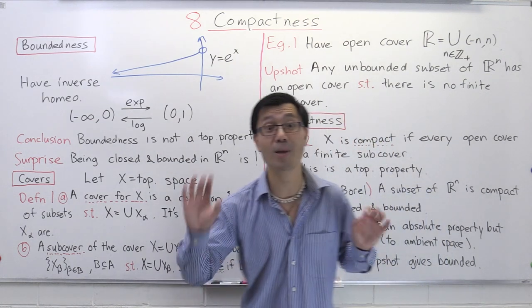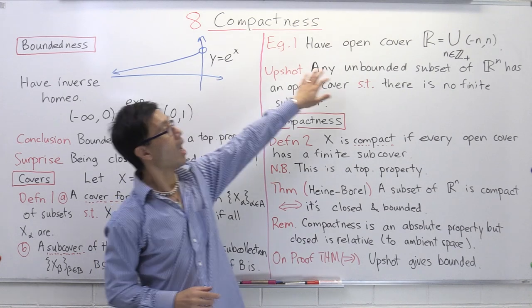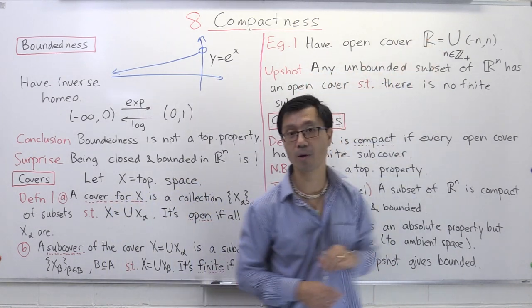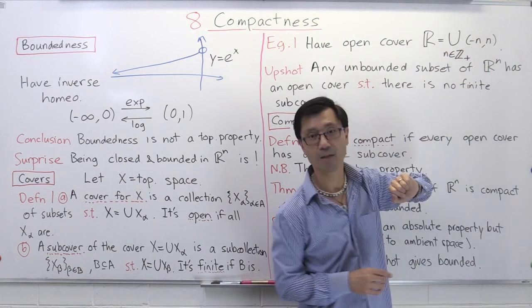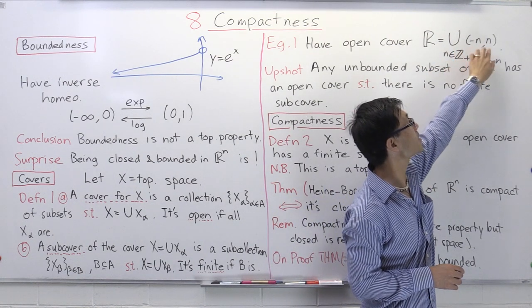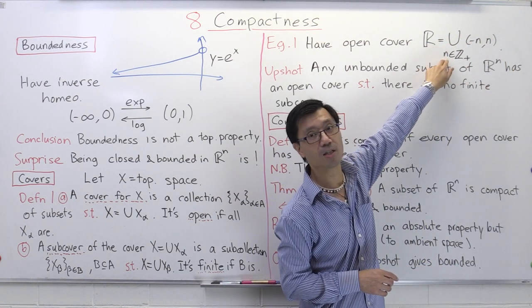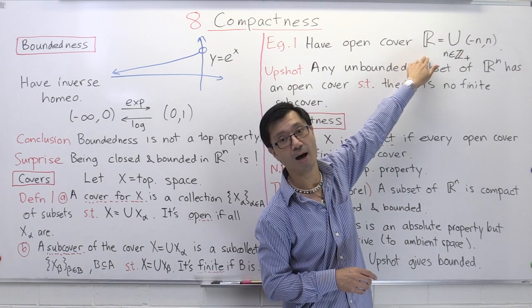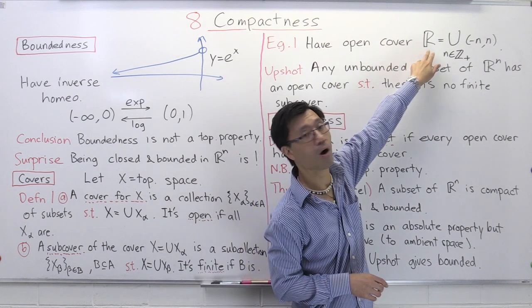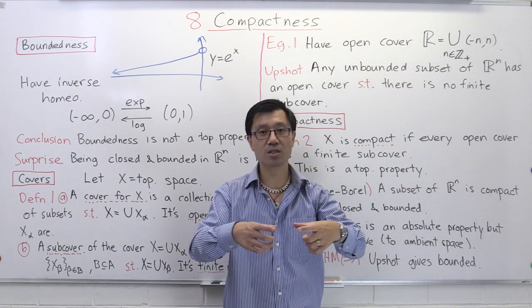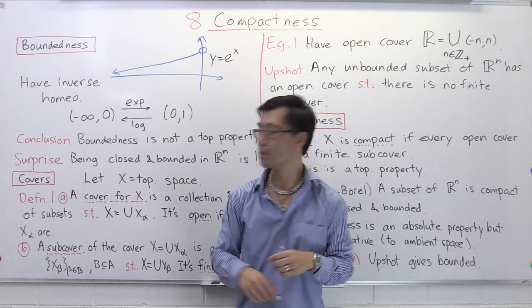Let's do a little example. Inside the reals with the Euclidean topology, for all positive integers n, look at the open interval from minus n to n. As we take the union over all positive integers, we cover all of R. Since these are open intervals, this is an open cover of R. These intervals are nested — they just get bigger and bigger, and their union is all of R.